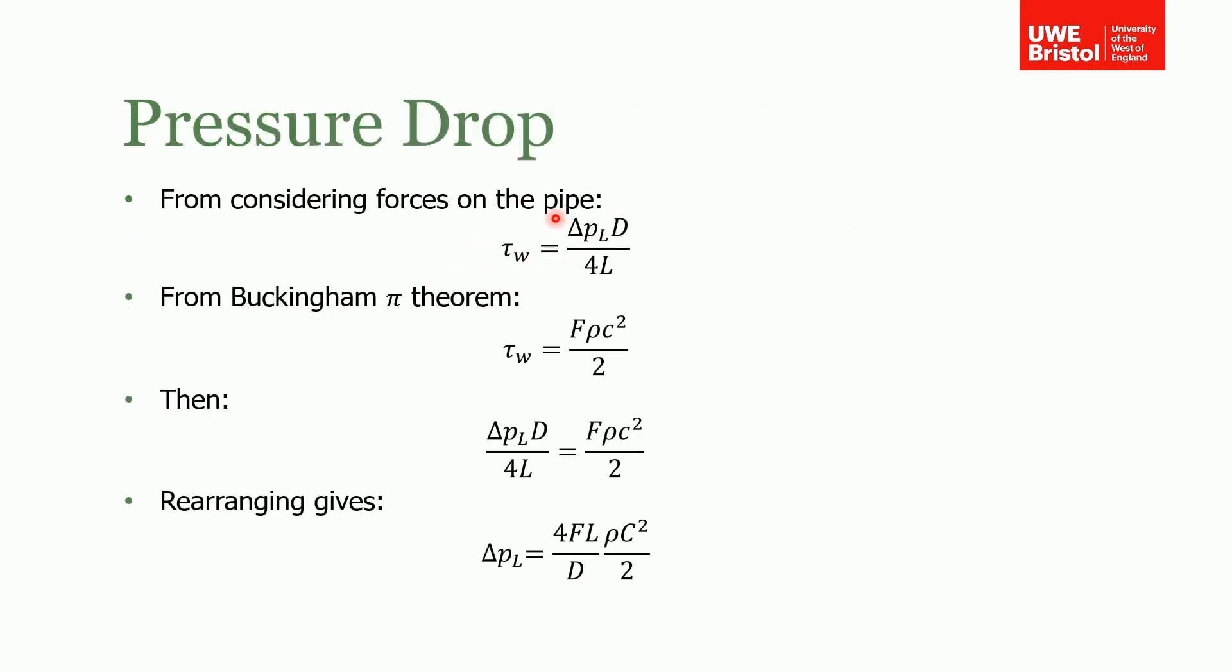We derived at the start of this lecture that the shear wall stress equals the pressure loss times the pipe diameter over 4L. Using the Buckingham Pi theorem, we also said the shear wall stress is a function of the Fanning friction factor, density, velocity, and so on. Therefore, we can relate these together. If we rearrange, we end up with the pressure loss as a function of the Fanning friction factor, length, diameter, density, and velocity of the fluid.